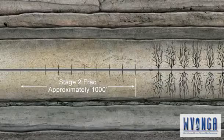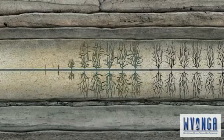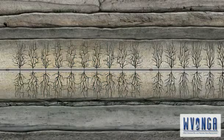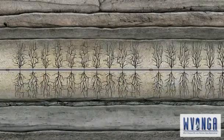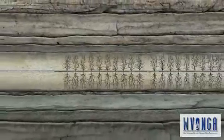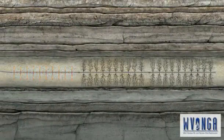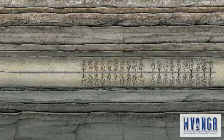Tight reservoirs do not contain natural fractures and therefore cannot be produced economically without hydraulic fracturing. The permeability is increased by providing pathways through which gas can flow more easily. With advancements in technology, multi-stage fracking has become the standard for tight gas reservoirs. This process of perfing and fracking can be repeated several times to cover the entire horizontal distance of the well bore.